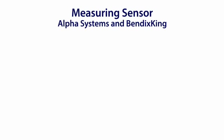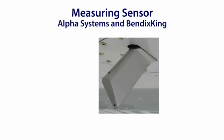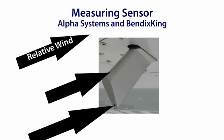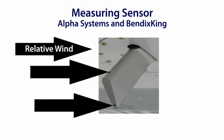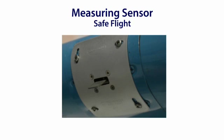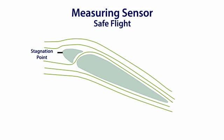The probe used in the Alpha Systems and Bendix King devices has two ports, each intaking ram air and sending it to the processing unit. The processor then calculates the difference in ram air pressure between the two ports to determine the direction of the relative wind. The Safe Flight device has a tab on the leading edge of the wing that is moved by the relative wind to sense the stagnation point, then sends this information to the device in the cockpit. While simple in theory, the precision of the device and its calibration is what allows it to measure the direction of the relative wind.